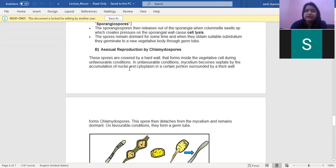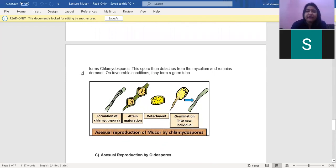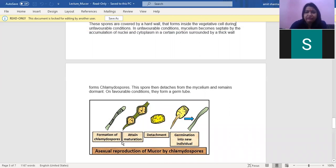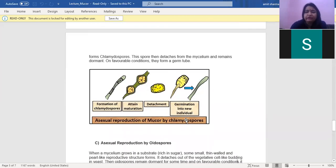The second method is asexual reproduction by chlamydospores. The chlamydospores are hard-walled structures formed inside the vegetative cell, usually formed during unfavorable conditions. In this diagram, you can see this is one chlamydospore, another chlamydospore. They are thick-walled. During unfavorable condition, the mycelium becomes septate and accumulates the nucleus and cytoplasm. These spores get detached from the mycelium and remain dormant. On the onset of favorable condition, they germinate to form a new germ tube.